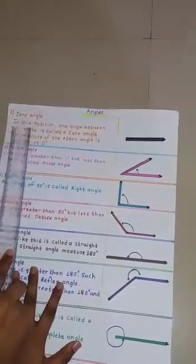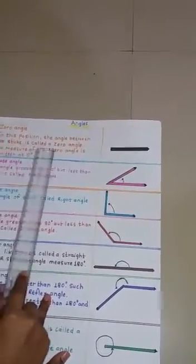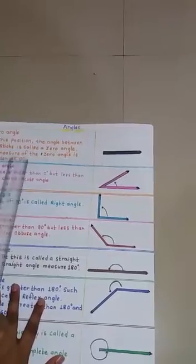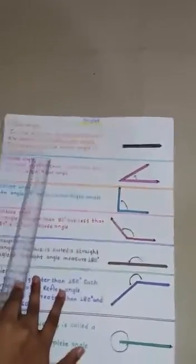Angles. 1. Zero angle. In this position, the angle between the stick is called a zero angle. The measure of the zero angle is written as zero degrees. This is a zero angle.